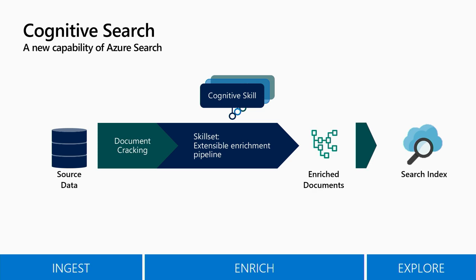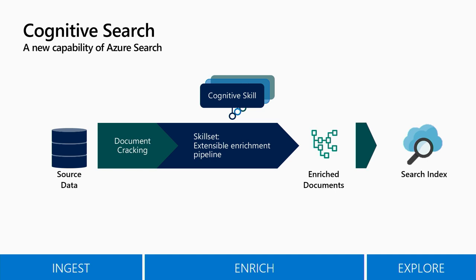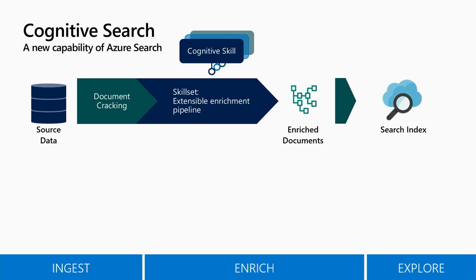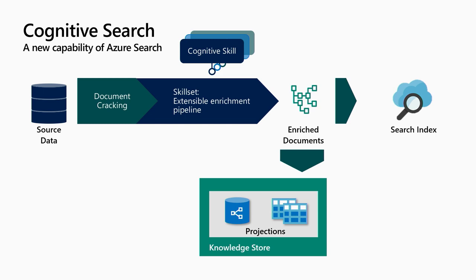There is a new capability of cognitive search that allows you to take that tree of information — the enriched document — and project it into tables or into an object format. The really cool thing is that it maintains the relations between each of those tables, and that is useful because now I can use it with tools like Power BI, train my own machine learning models, or create a virtuous loop where a human verifies what the machine did and then trains a skill to continue processing documents.